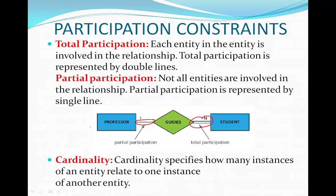Cardinality specifies how many instances of one entity relate to one instance of another entity. If one instance of one entity is related to two or more instances of another entity, then the cardinality is that number. If one instance is related to exactly one instance of another entity, it is called a single or one-to-one cardinality.